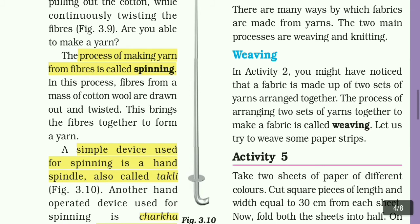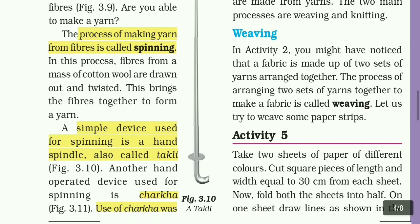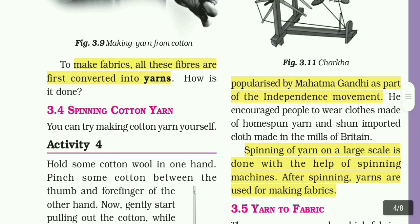A simple device used for spinning is a hand spindle called a takli. Another hand-operated device used for spinning is a chakra. Use of the chakra was popularized by Mahatma Gandhi as part of the independence movement. He encouraged people to wear cloths made of homespun yarn and shun imported cloths made in the mills of Britain.